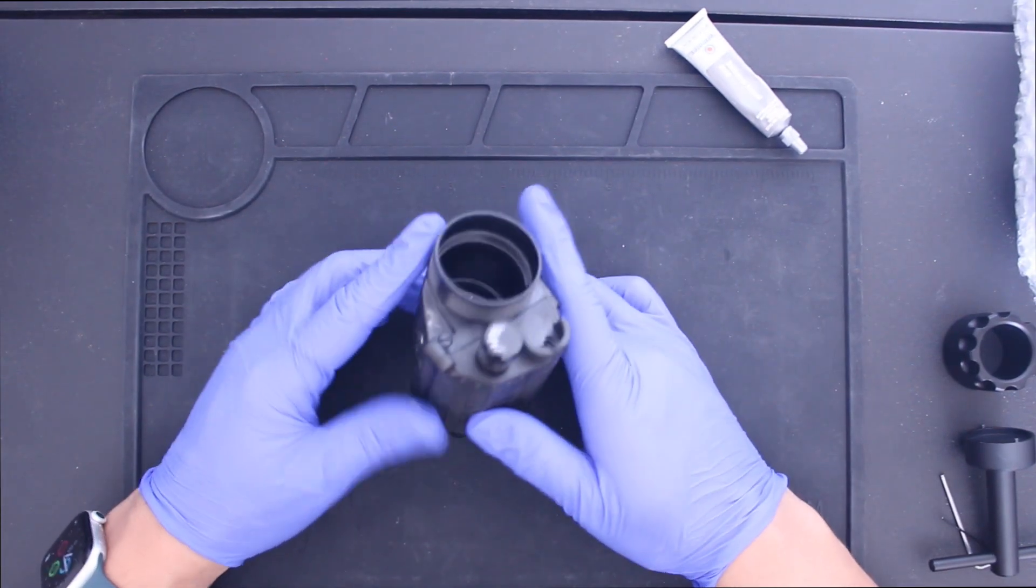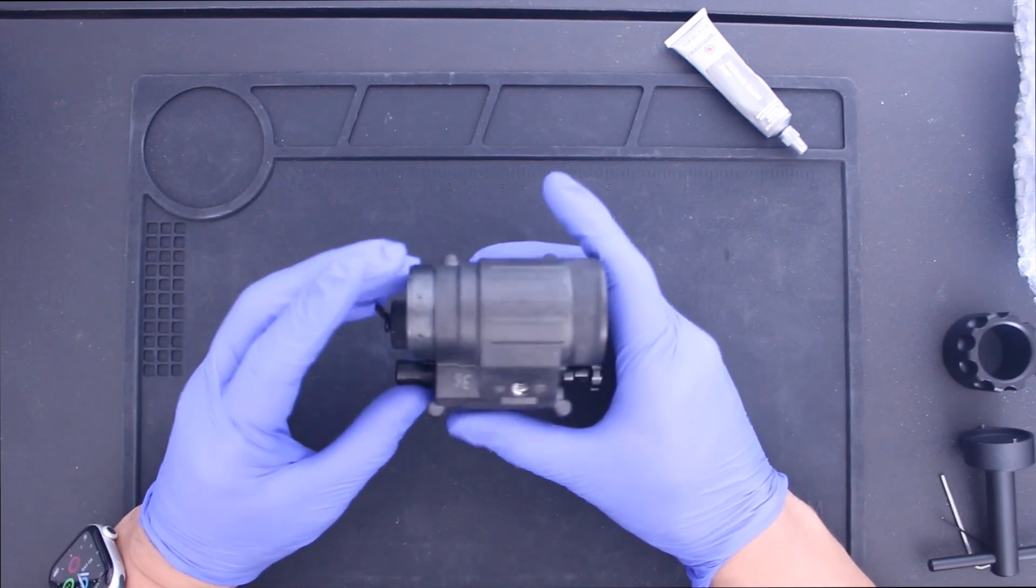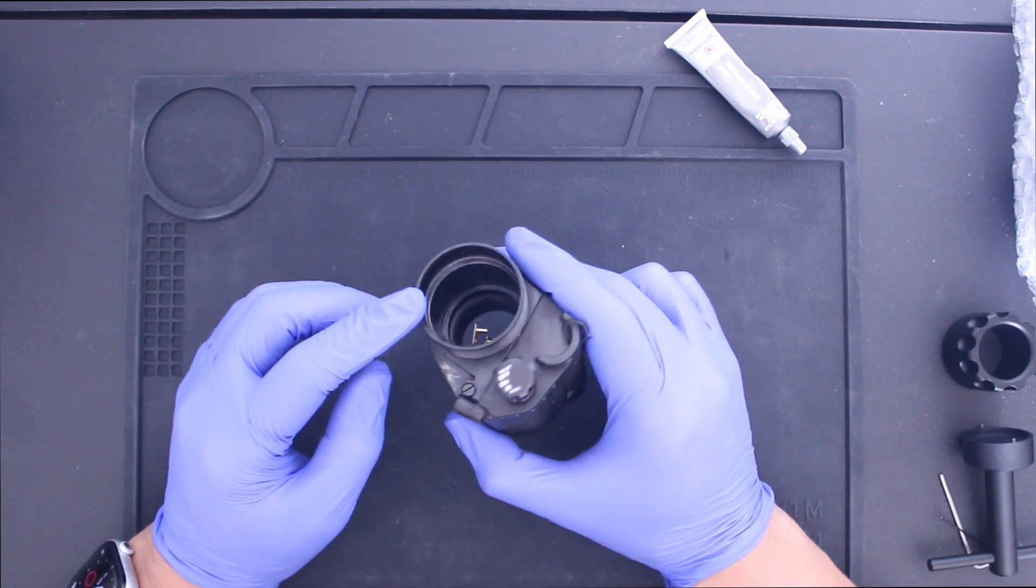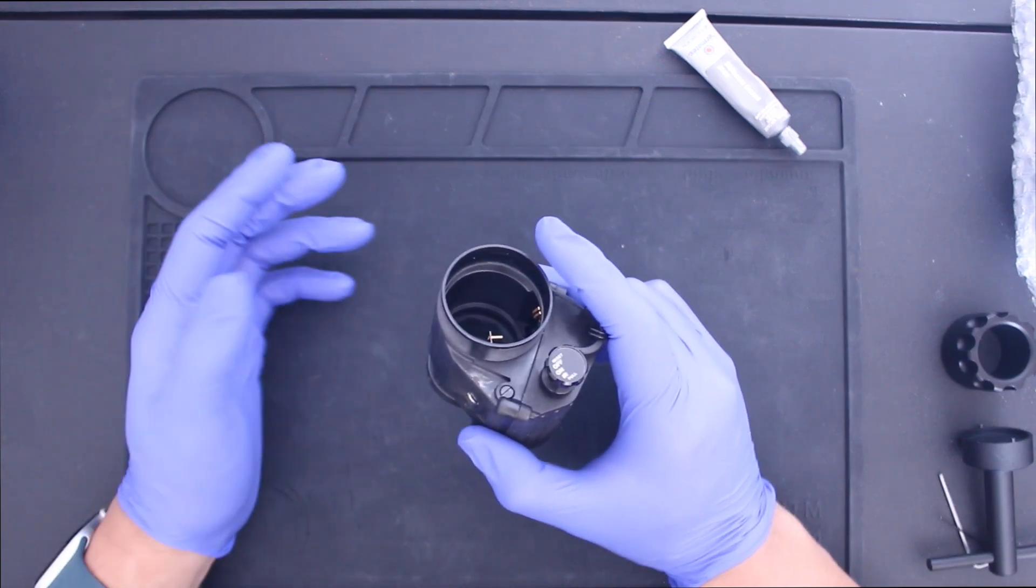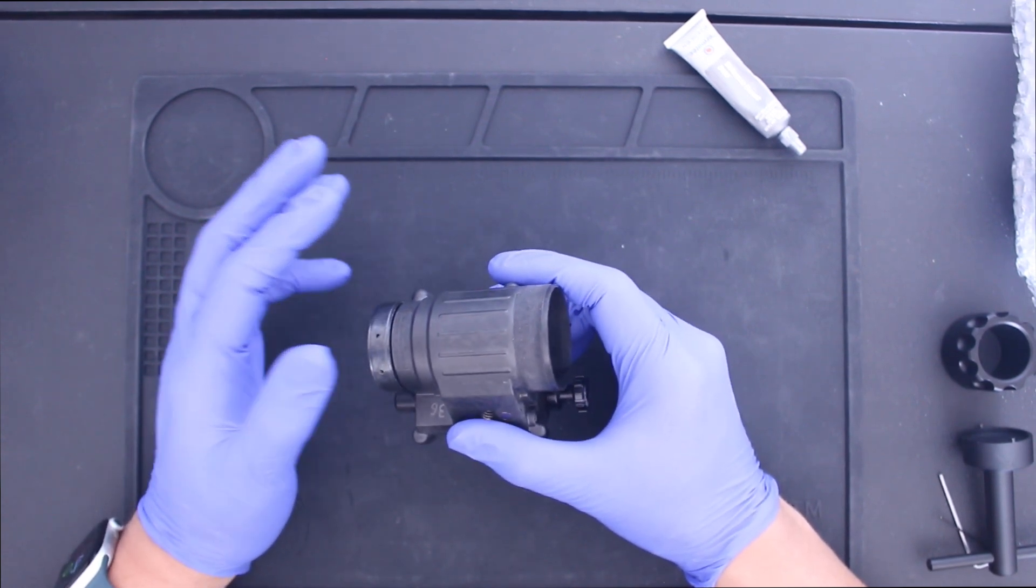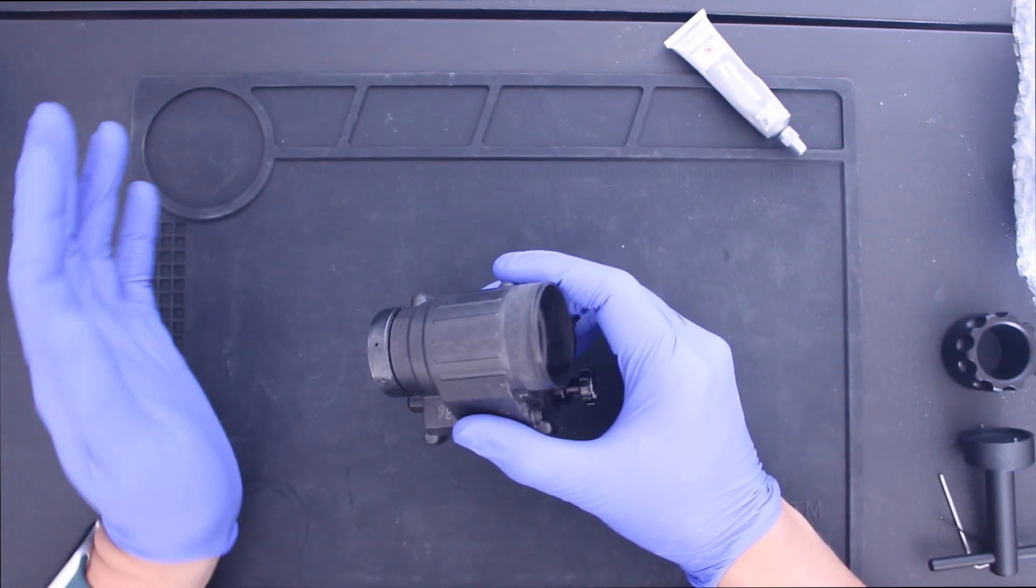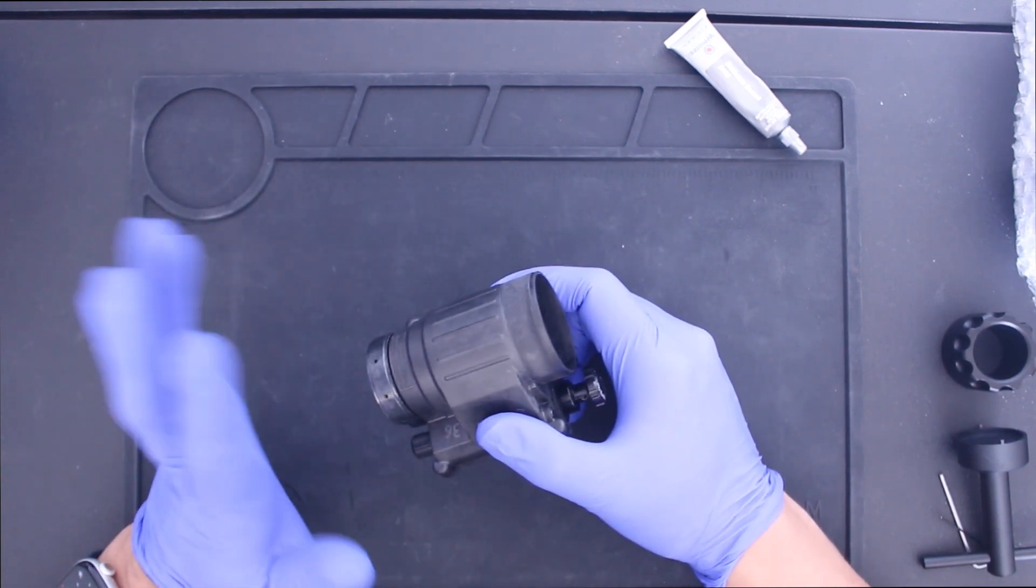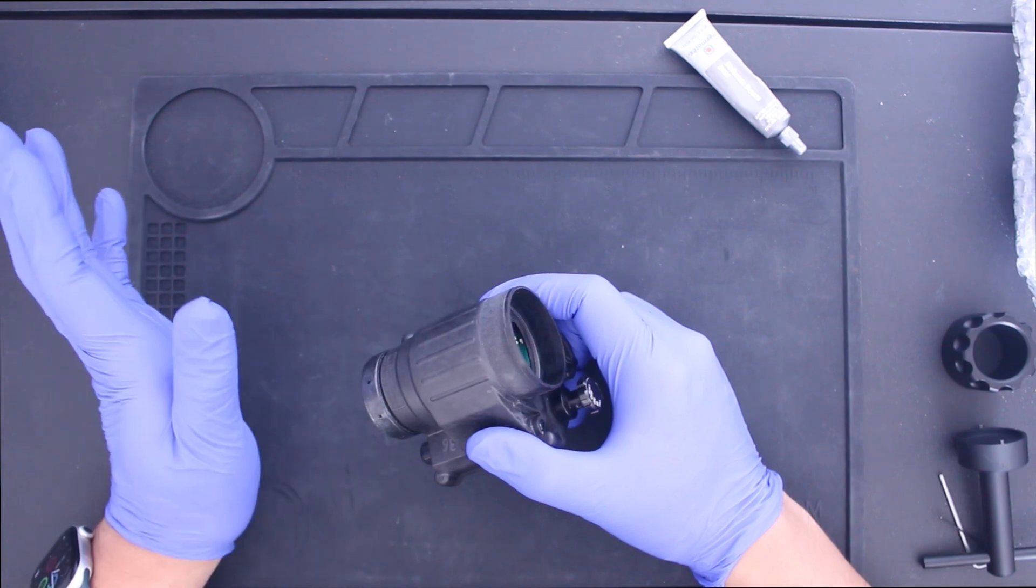So I got the housing right here. And the thing about a PBS-14 housing is you have to be careful with the threads because the threads are very fine and it's extremely easy to cross thread. So you have to be very careful. Make sure you index your rings correctly before you start screwing it in. And if you feel any resistance to stop, back it off and try again.